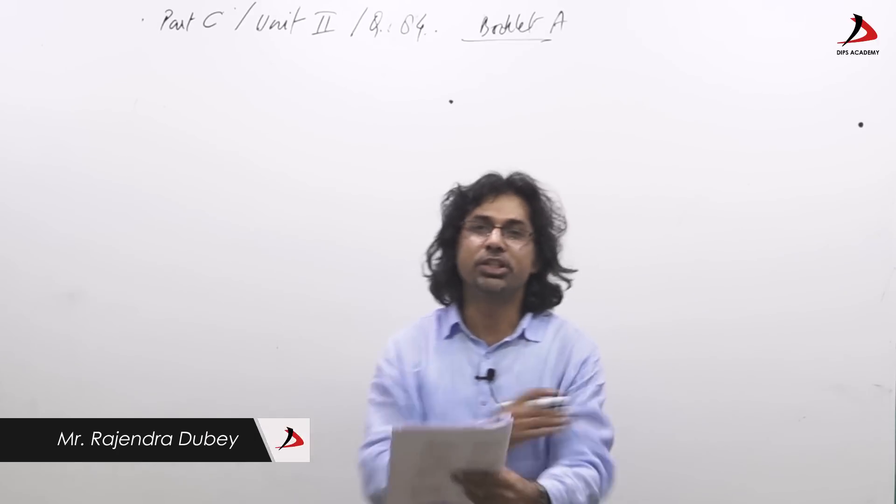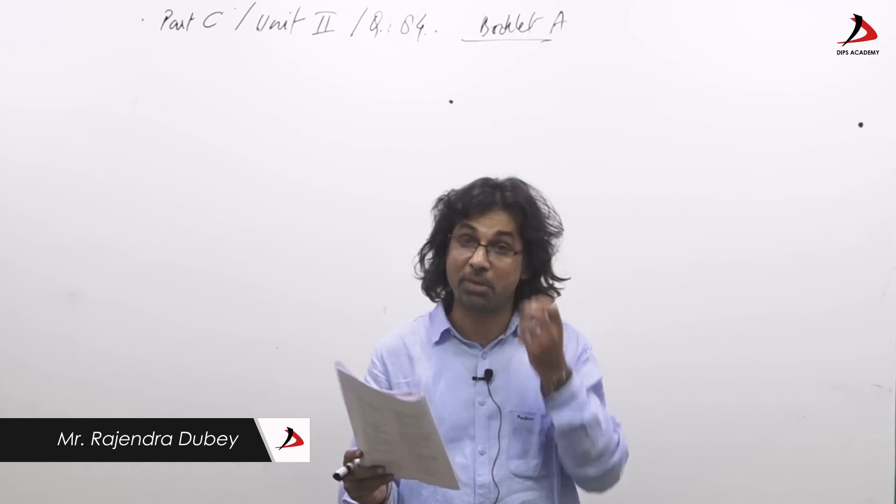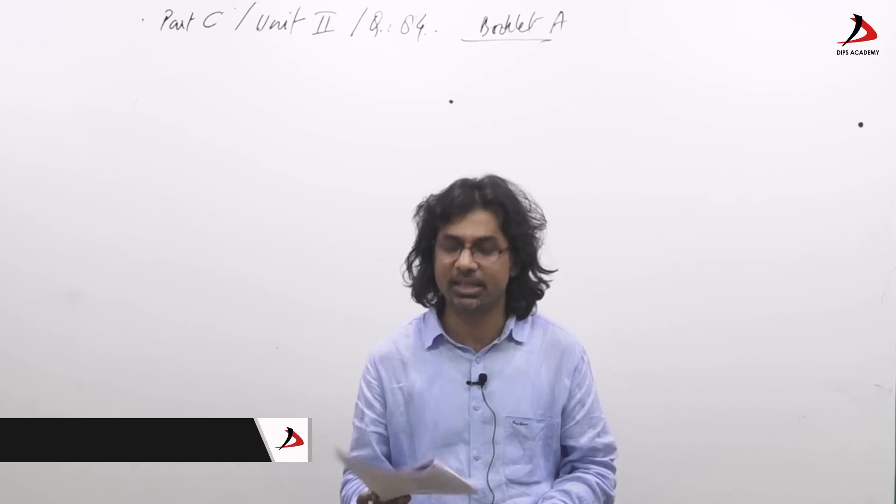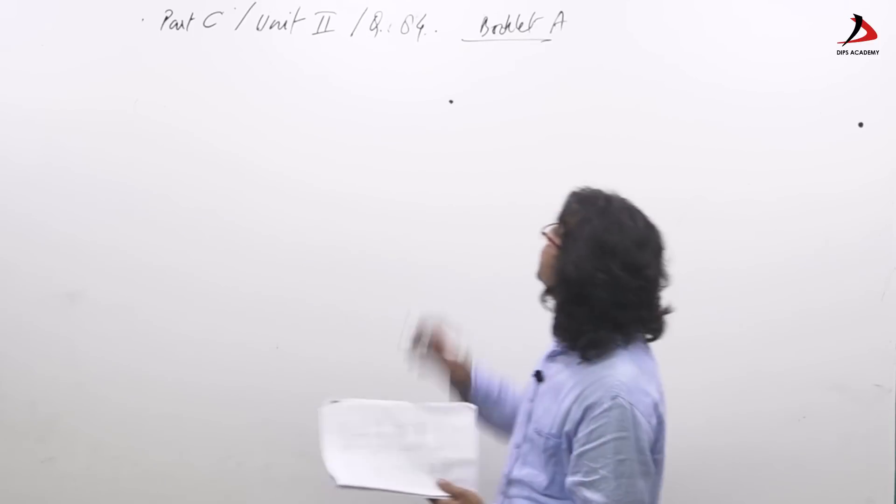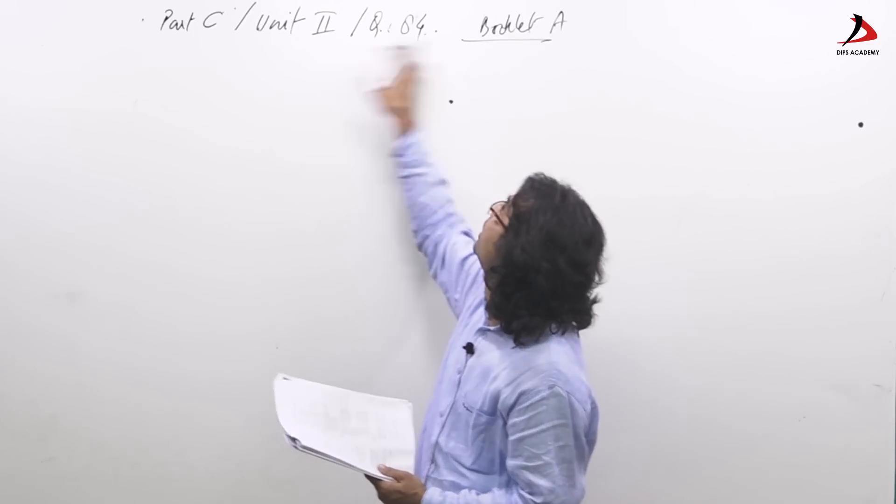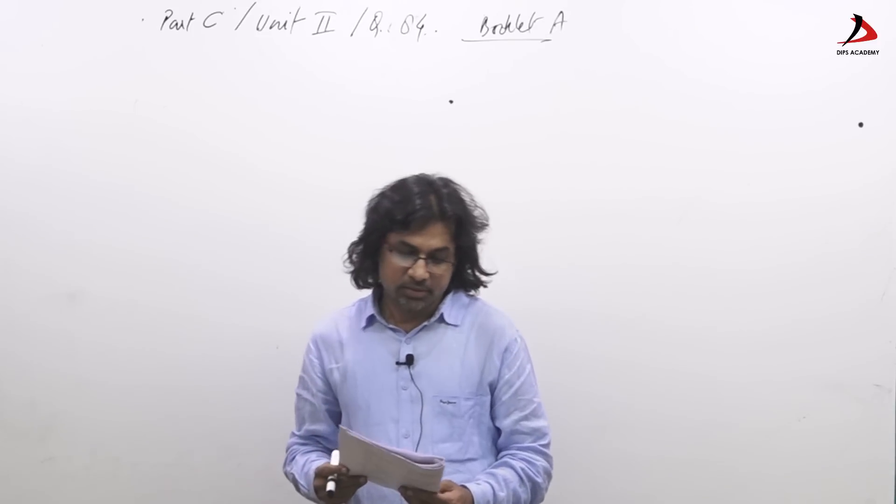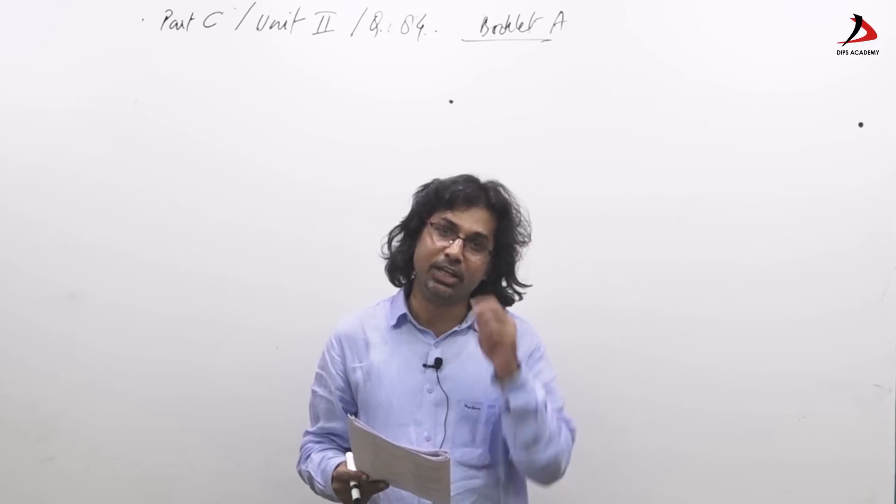Hi guys, here we are providing solutions of questions from modern algebra in part C where questions are multiple correct. The question number 84 of course part C unit 2 and booklet A. The question talks about abelian group which is finite of order n.